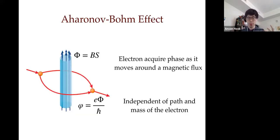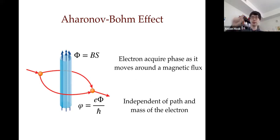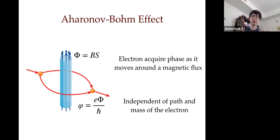The most classic example of topology in physics is the Aharonov-Bohm effect. You take an electron, move it around a magnetic flux, and the electron acquires a phase that's completely independent of the path taken, the mass of the electron, or any other details. This is a very nice topological object you can measure in your theory, and it's probably the first one any of us ever learned.